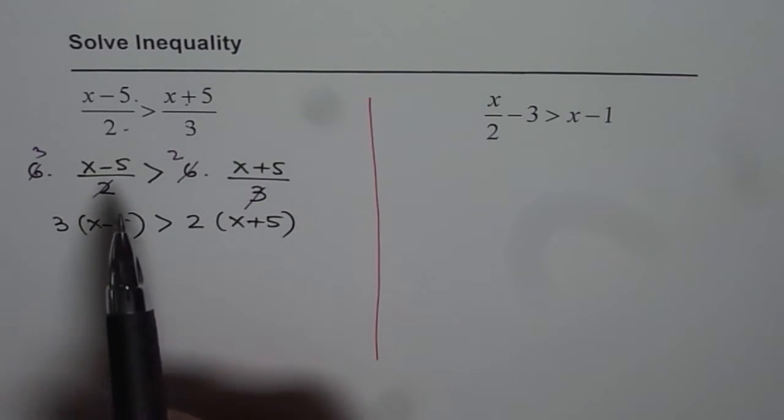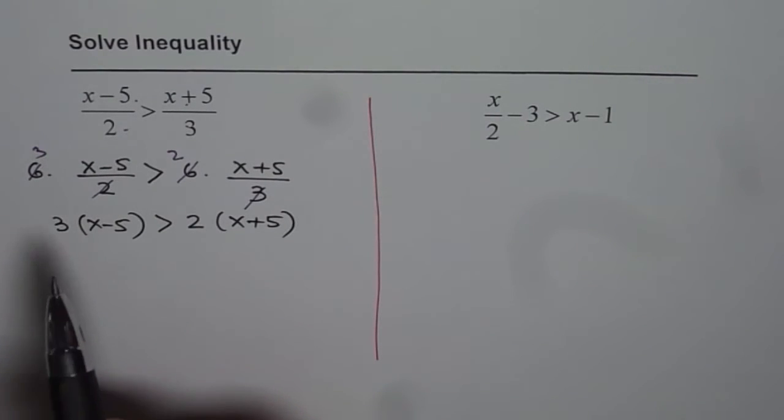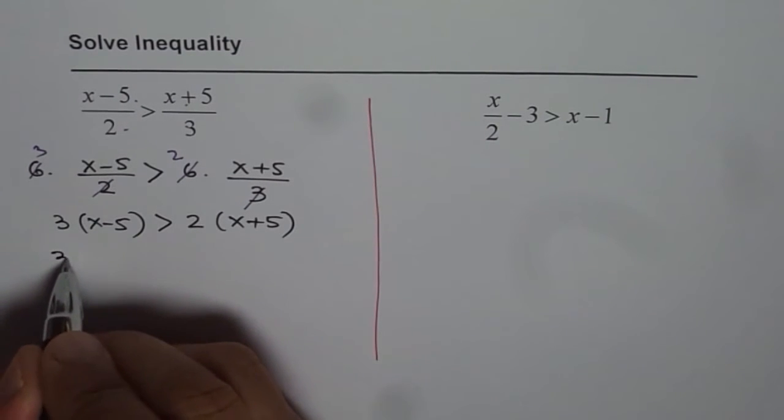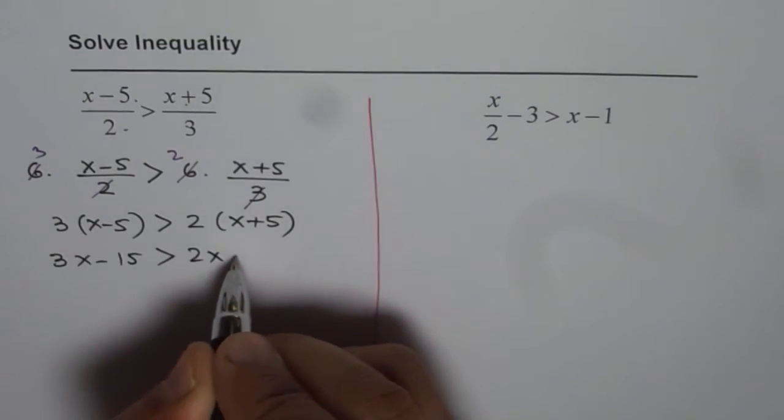Now remember one thing, both are positive. If one of them or if the product is negative, then you reverse the sign also. Now let's expand and simplify. So we get 3x minus 15 is greater than 2x plus 10.